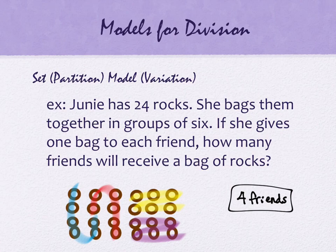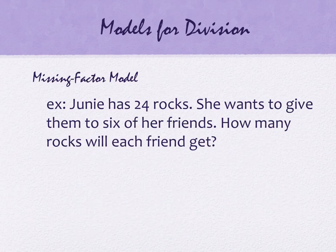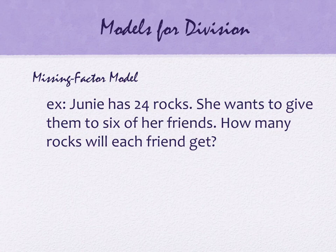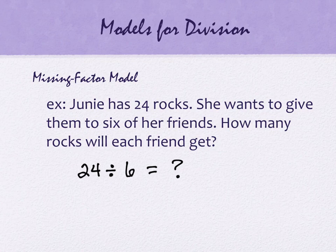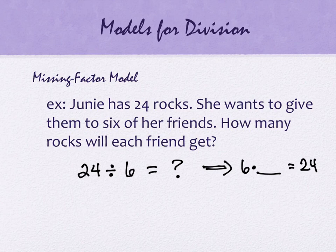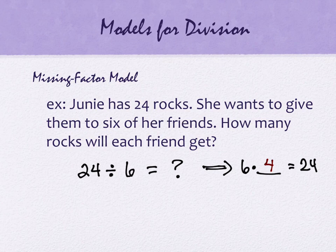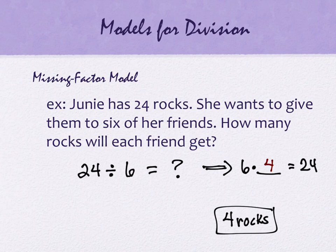The last model is the missing factor model — same problem. Junie has 24 rocks, wants to give them to six of her friends, how many rocks will each friend get? What we do is think of it as a division problem: 24 divided by 6 equals something. And we change this into a multiplication problem: 6 times something equals 24. There's no visual picture for this — it's a missing factor equation perspective. We hinge back into what we know about multiplication, and of course the answer in the blank is four. So we still end up getting four rocks per friend, but from the perspective of multiplication rather than subtraction or partitioning.